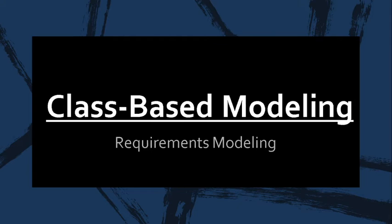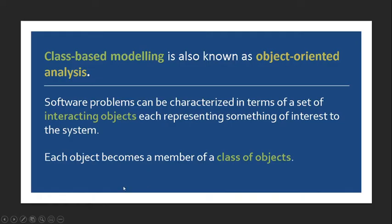This time, we will talk about the second approach in requirements modeling, which is the class-based modeling. We have already established that class-based modeling is an offshoot of object-oriented analysis. In this kind of analysis, we model user requirements or any system by looking at the objects that participate in the system and the interactions among and between these objects.